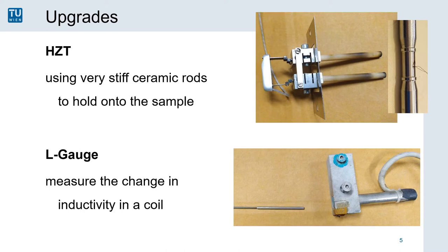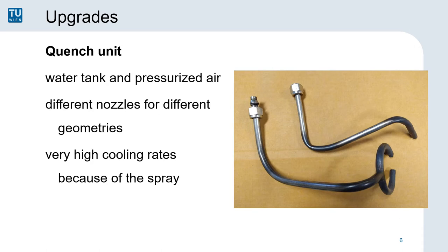Next, I want to talk about two of the upgrades that we use to improve our ability to accurately measure the strain inside the samples. The HZT probe uses ceramic rods anchored on the two rims outside the testing area. The deformation of the rods is translated mechanically into a very precise measuring cell. In contrast, the L-Gauge uses a ferromagnetic core mounted on one side, which moves into and out of a hollow coil and thus changing the inductivity of the coil. Both systems allow us to precisely measure the length of the sample and thus improve our ability.